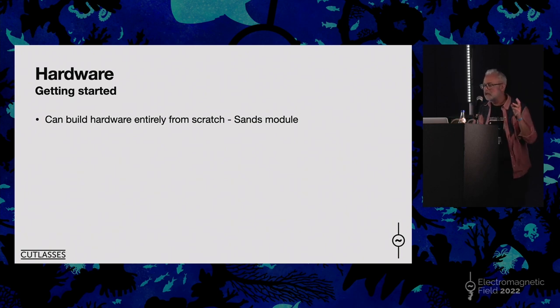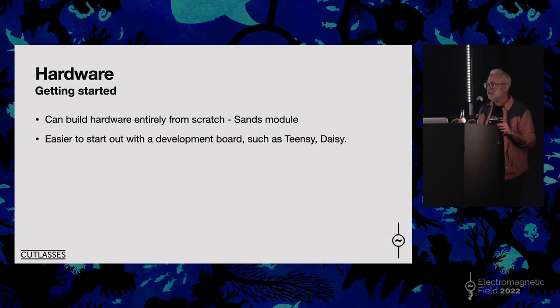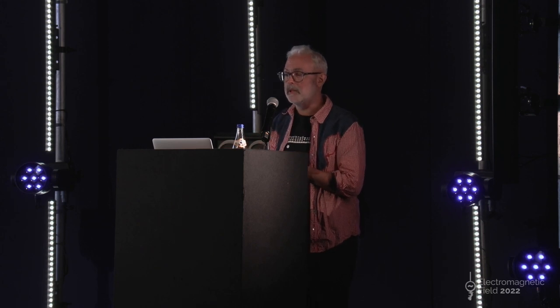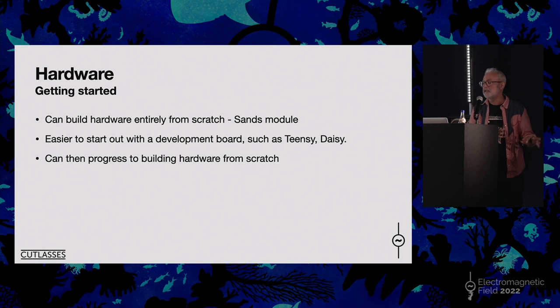So how do we get started making them? You can go the entire from-scratch route — build everything yourself, assemble your own PCBs, connect everything up — which is what I did with one of my modules, the SANS module. But I wouldn't advise starting like that. It's much easier to start out with a development board. Here I'm going to talk about Teensy and Daisy as two good options. Most people know what Arduino is — Teensy and Daisy are a very similar idea: just a development board with your microcontroller and a bunch of hardware to interface with the outside world. Once you've got your design working on a dev board, you can go further and eventually build it all from scratch if you want to make many of them.